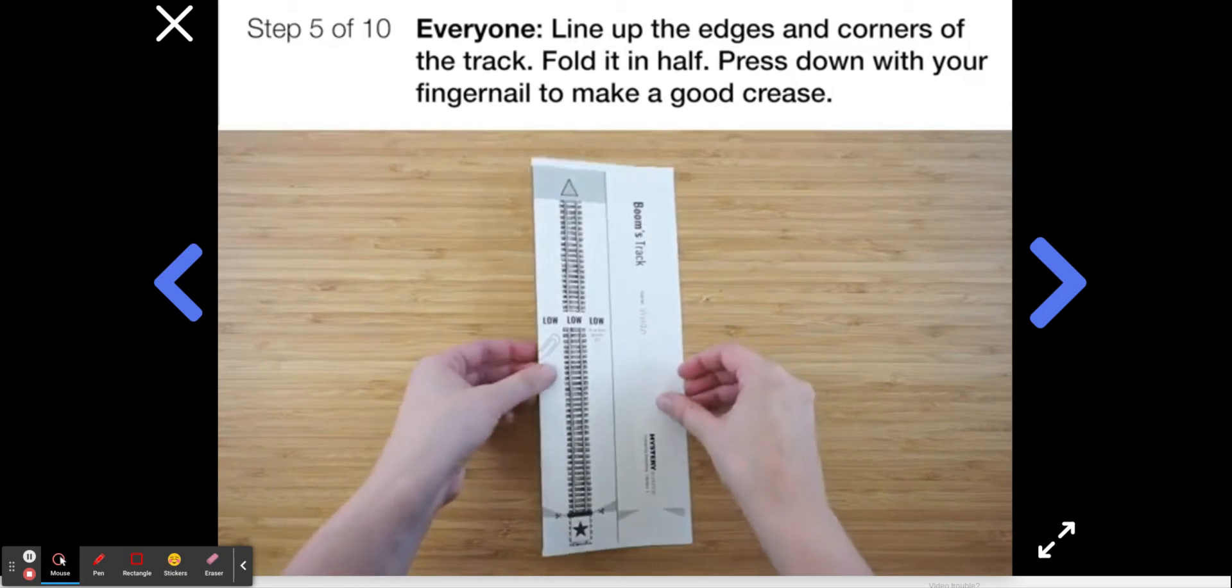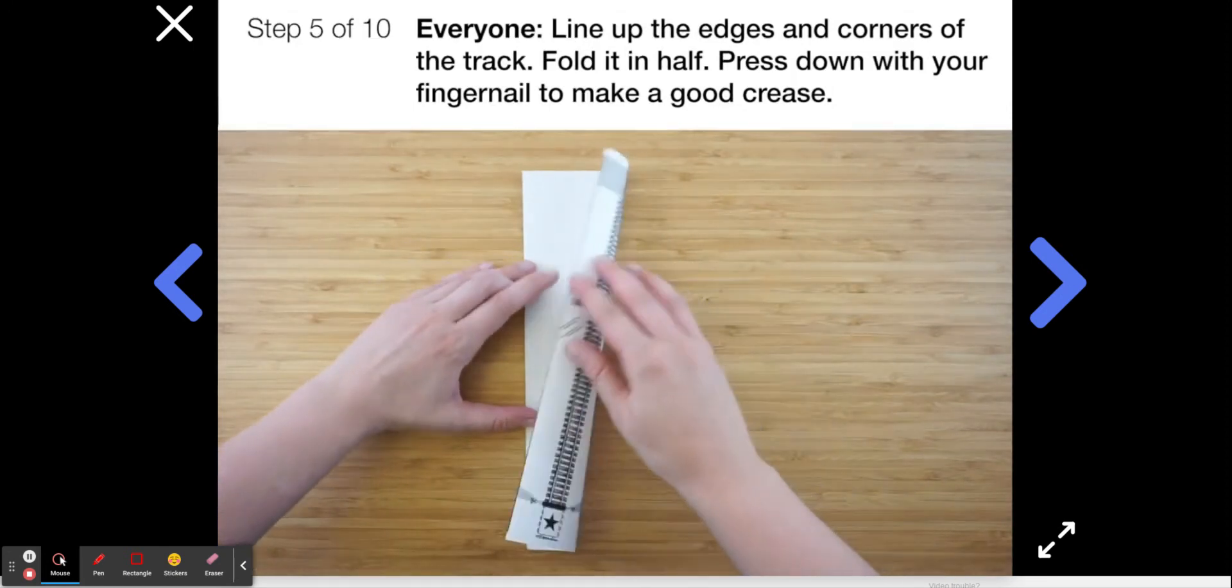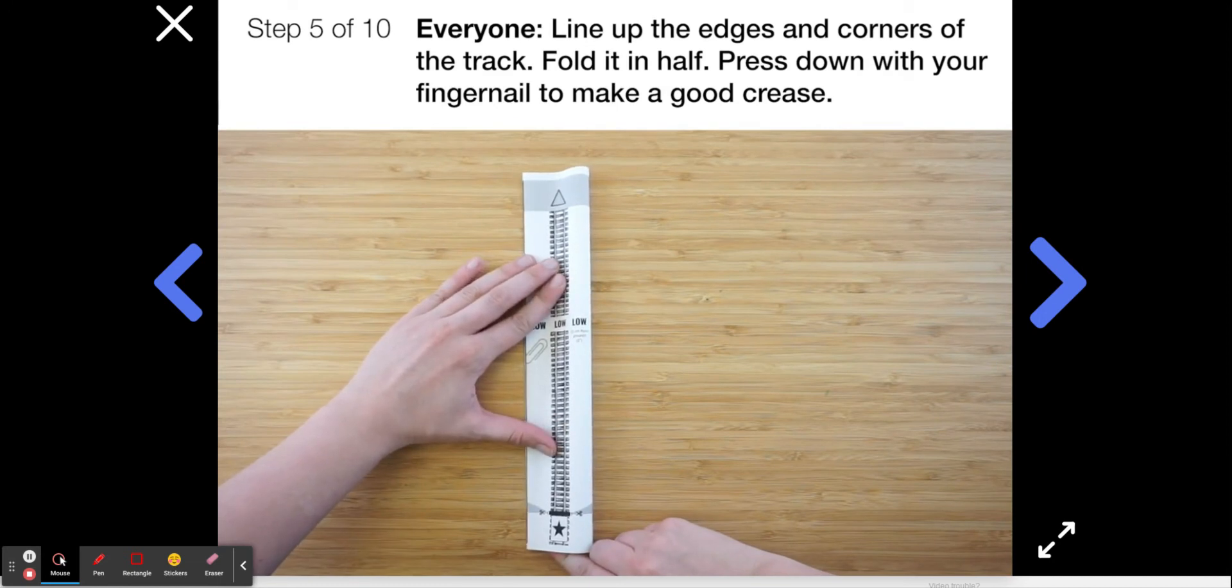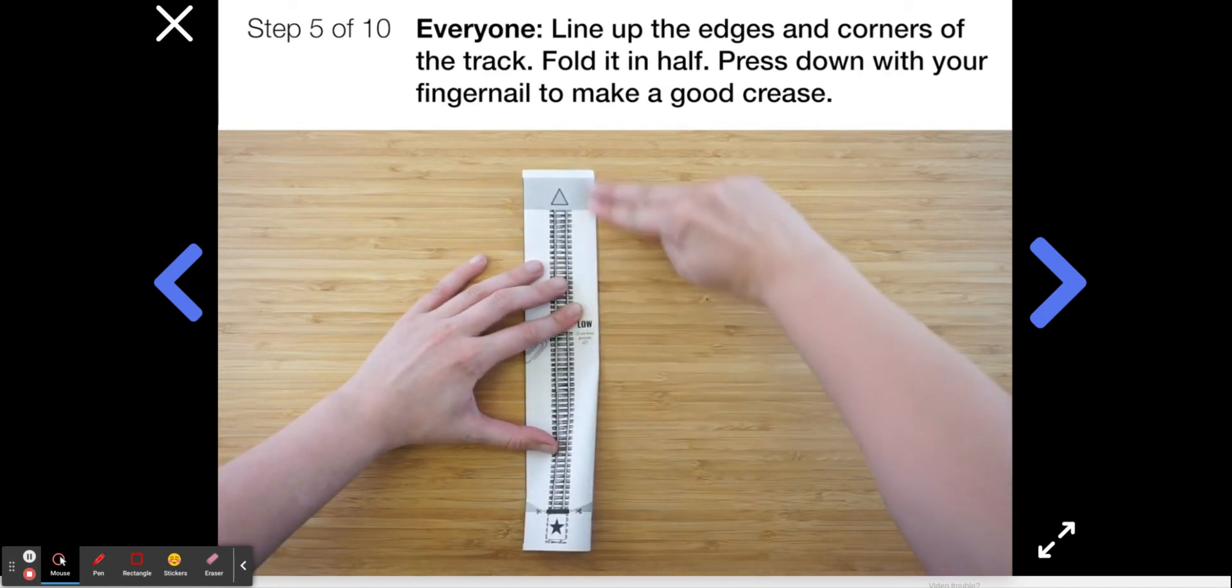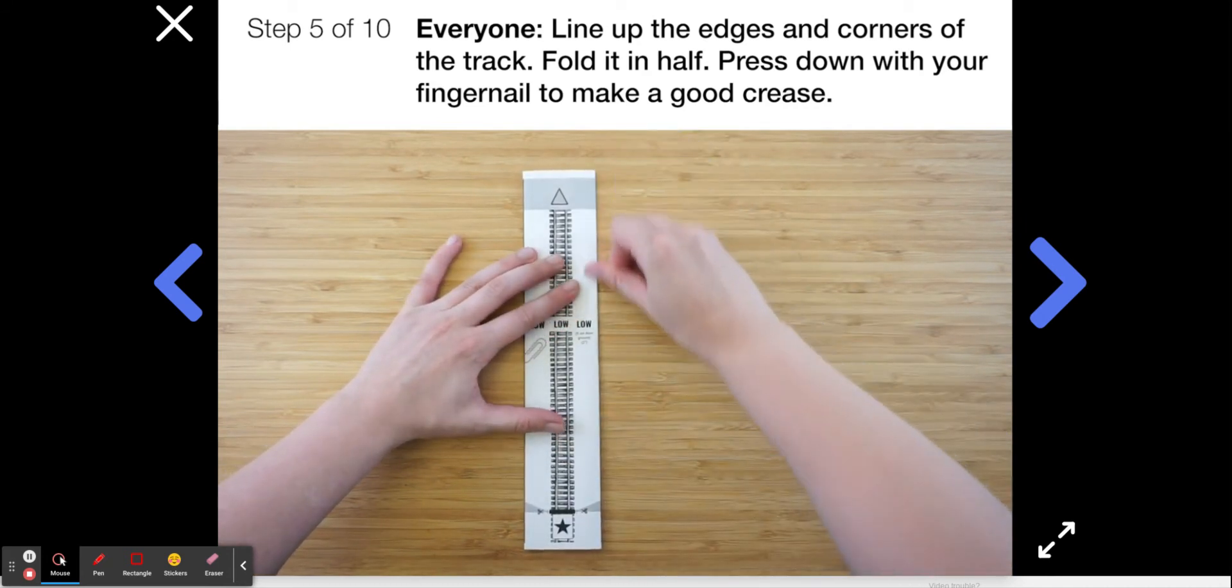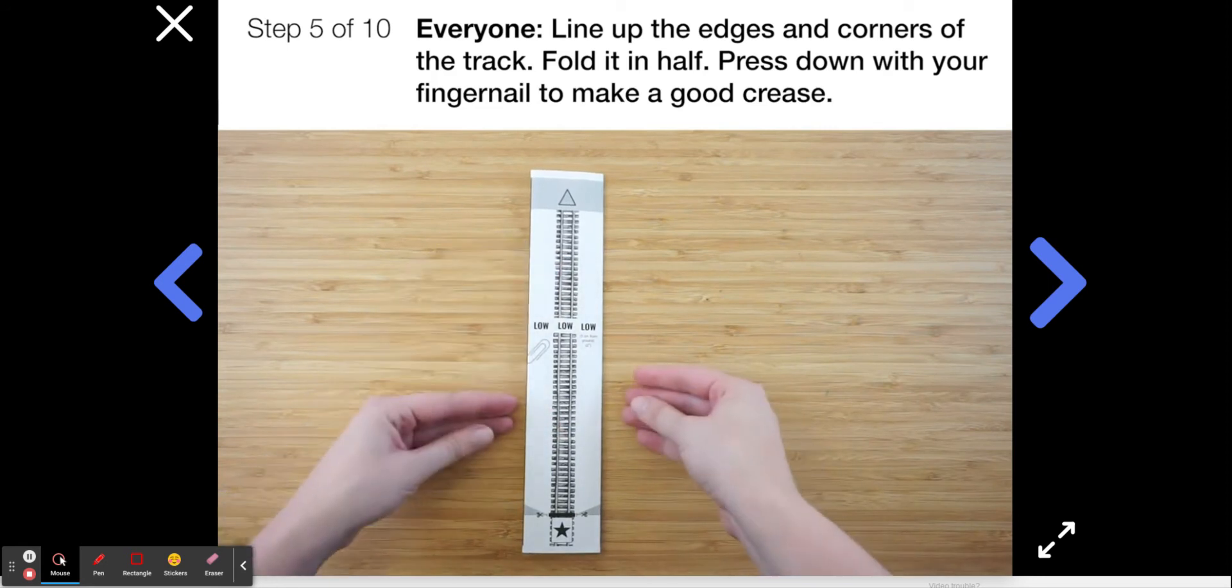Now let's get back to your tracks and make them sturdy. What you'll want to do is fold them in half just like this. Make sure to line up the corners and the edges before you press down. Then use your fingernail to make a really good crease. It should look like this when you're done.